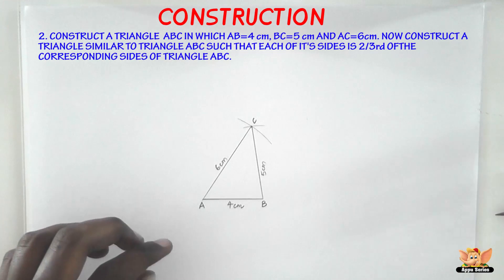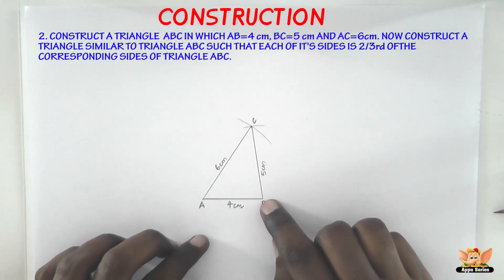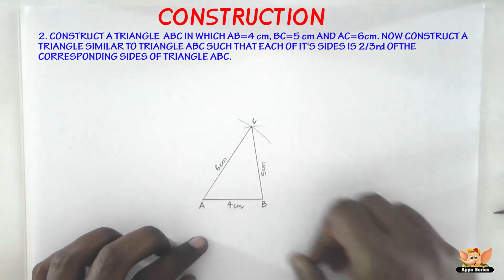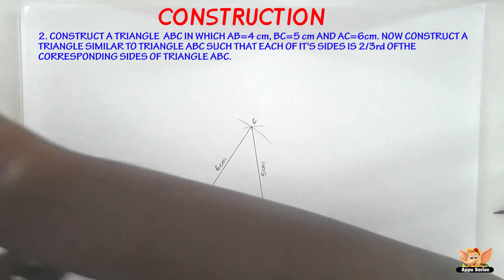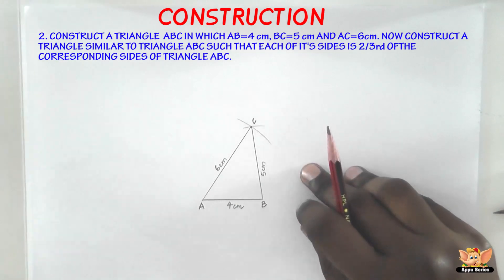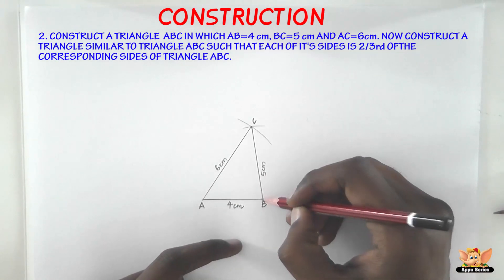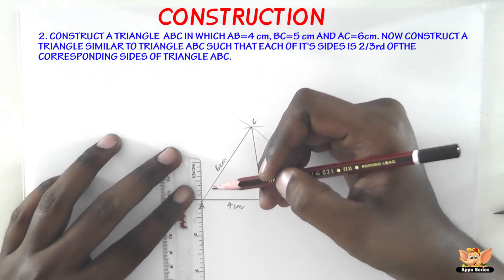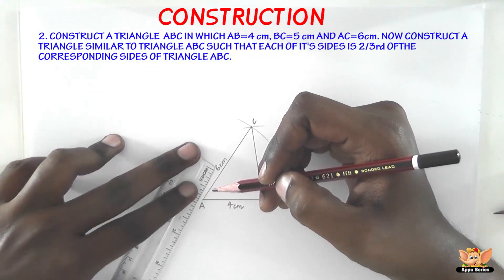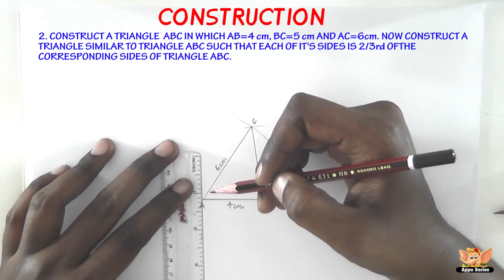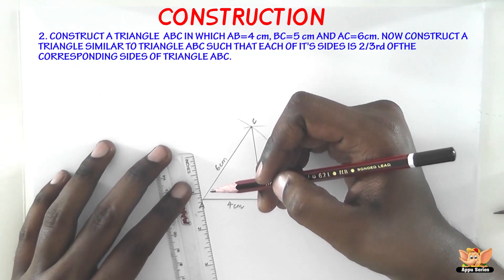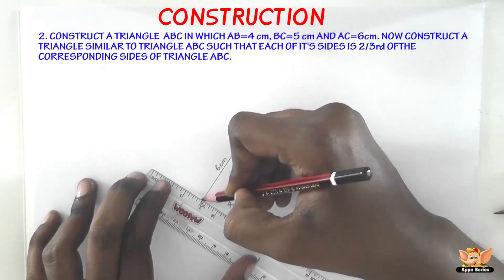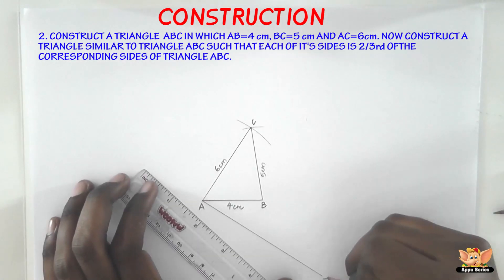So now the first step is to construct a line or construct an acute angle BAX such that AX is a ray. So the condition is we need an angle BAX to be acute. So just take a random acute angle because this is going to be a right angle, anything beyond this is going to be obtuse. So don't keep straight, don't be so close, so this is definitely an acute angle. So here I have AX.